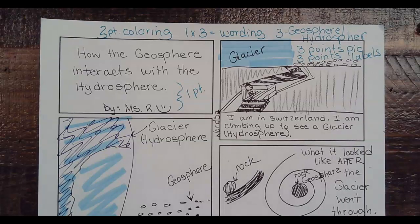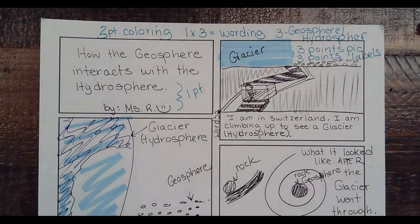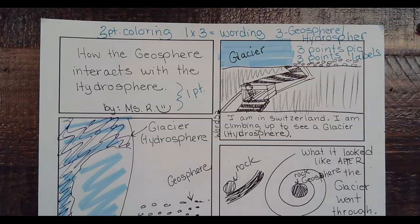Now, what is the hydrosphere? The hydrosphere is water. Water can take three forms, but two forms are what we're really talking about: the solid form, which would be ice, and the liquid form, which is the water you see.